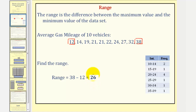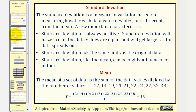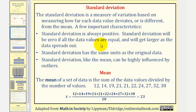Now let's talk about standard deviation. The standard deviation is a measure of variation based on measuring how far each data value deviates or is different from the mean. Here are a few important characteristics: standard deviation is always positive, standard deviation will be zero if all the data values are equal, and will get larger as the data spreads out.